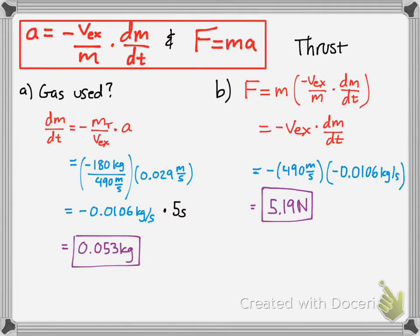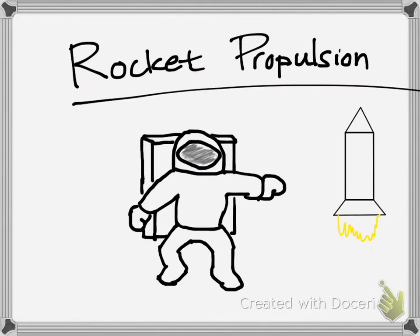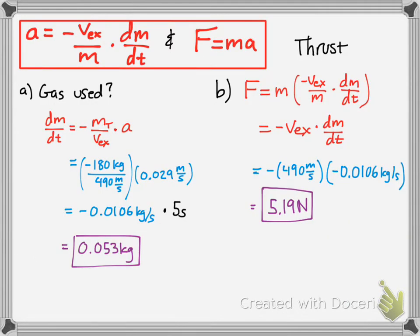So, that is a typical rocket propulsion equation. I thought it was pretty cool, pretty basic. Just kind of think about this picture here, about this astronaut moving, and kind of get an idea of what's going on, and just going over the basic ideas of rocket propulsion. Alright, hope this helped, and keep practicing.